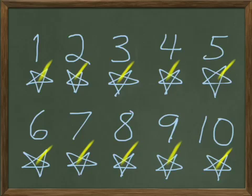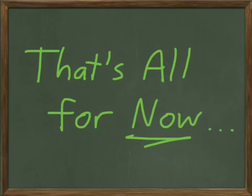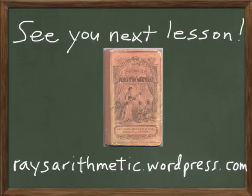That's all the counting we're going to do for today until next lesson. So what we just did was count one through ten — and that is all for now. We will see you next lesson. In the meantime, if you want more information about Ray's Arithmetic and about other homeschooling ideas and solutions, you can go to raisearithmetic.wordpress.com.